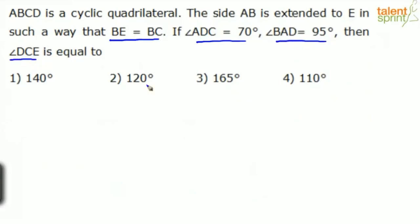Options given are 140, 120, 165, and 110. So let's draw the figure first. ABCD is a cyclic quadrilateral. What do you mean by cyclic quadrilateral? All the four vertices of this quadrilateral will lie on the same circle. So let's consider the cyclic quadrilateral first.